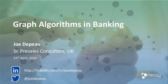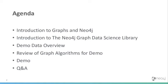Good day, everyone. Thanks for joining. Today we will be talking about graph algorithms, and we're going to explain how they can be used. We'll give some examples, specifically in the context of banking and banking data. We'll start with an introduction to graphs and Neo4j, the graph database and the graph company. We'll talk about the Neo4j graph data science library, which is what we're going to be using today. Then we'll review the data, cover the graph algorithms for the demo, and there'll be time at the end for Q&A.